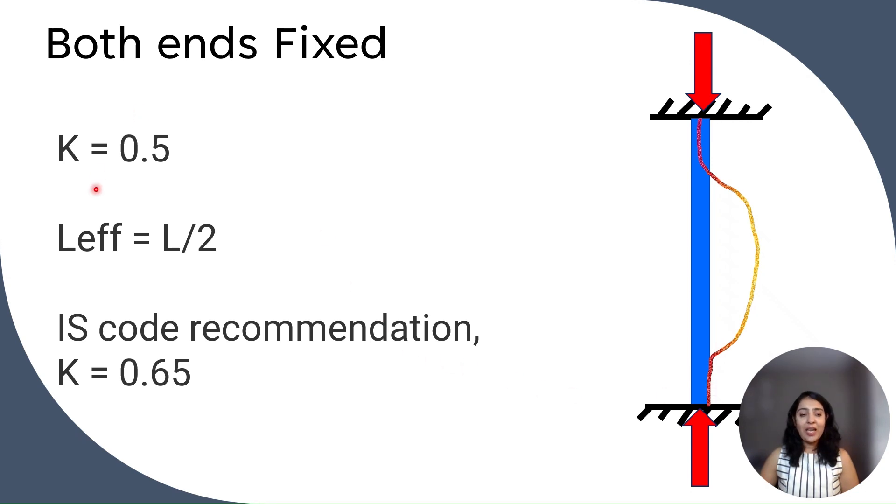So K, effective length factor, is 0.5. So L effective is unsupported length divided by 2. And IS code, that is Indian Standard code recommendation, is take K as 0.65.